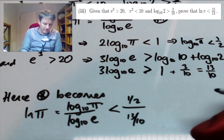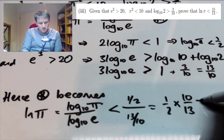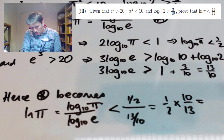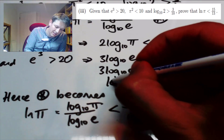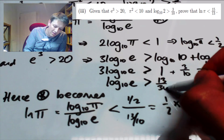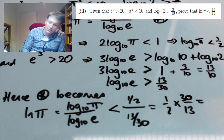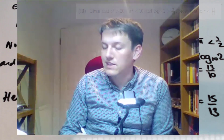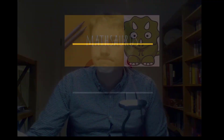So log_e(π) is less than (1/2) divided by (13/30), which is 1/2 times 30/13, giving 15/13. That's exactly what we wanted. So we're done.